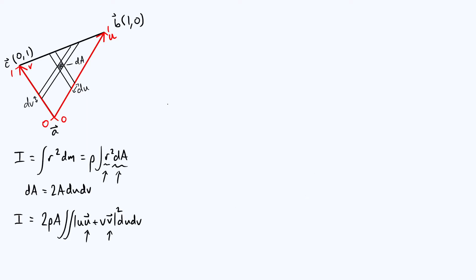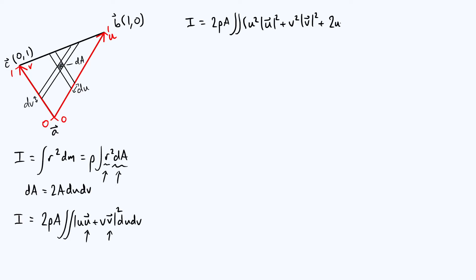Let's expand this integrand out even more. Our moment of inertia I is 2ρA times the double integral of the following: when you expand that squared modulus you get u squared times the modulus of the u vector squared, a similar term for v squared times the modulus of the v vector squared, and then the cross term which is 2uv times the dot product of the u and v vectors — all integrated with respect to u and v.